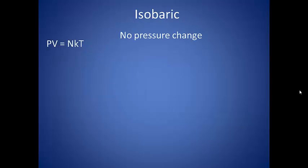ISO means the same, and baric refers to pressure. We measure pressure with a barometer, so that particular root word talks about the pressure. When we put the prefix iso in front of it, it means the same. So an isobaric process is one in which the pressure is kept constant.